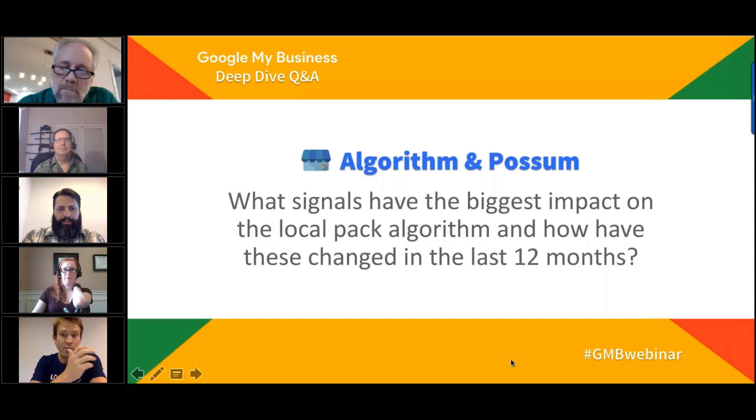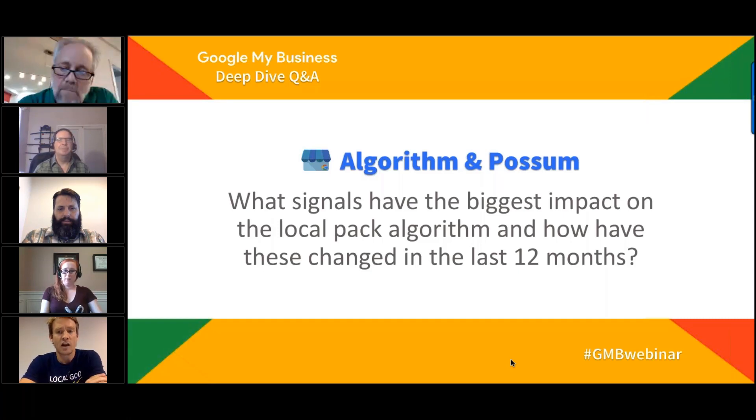The next question: What signals have the biggest impact on the local algorithm, and how have these changed in the last 12 months?